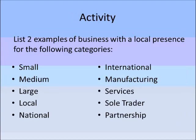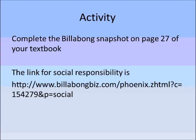Using your textbooks or internet research, find two examples of businesses with a local presence for each of the following categories. For example, in the Southern Highlands, if you're looking for a small business you'd be looking for someone like a plumber or a cafe. An international example would be someone like McDonald's, which is an international company that has a local presence in this area. When you've completed that, please complete the Billabong snapshot on page 27 of the textbook.